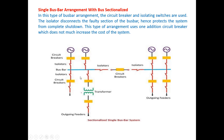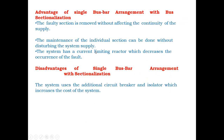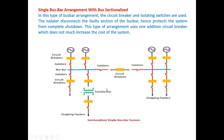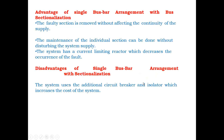Under emergency conditions, we can open the isolator and perform maintenance of the bus bar. The advantage of single bus bar with sectionalizing switches is that the faulty section is removed without affecting the continuity of supply. The disadvantages are that additional circuit breakers and additional sectionalizing switches are required, which increases the cost.